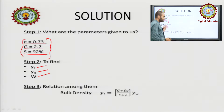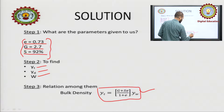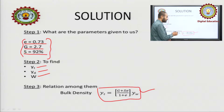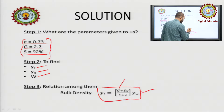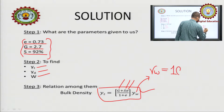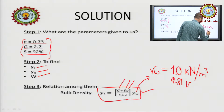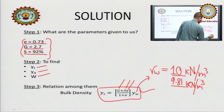First, you know that γT (bulk density) = (Gs + S·E) / (1 + E) × γW. We are already given the values of G, S, and E. For γW, as I told you in the last class, you can use 9.81 or 10 kN/m³.